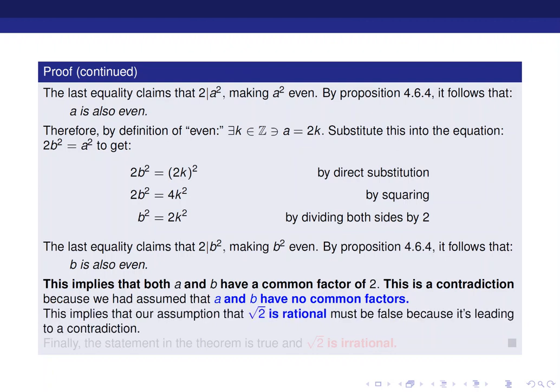Which means that our assumption that square root of 2 is rational must be false. Because it's leading to contradiction. So that means the statement of the theorem is in fact true. And we can finally claim that square root of 2 is irrational.